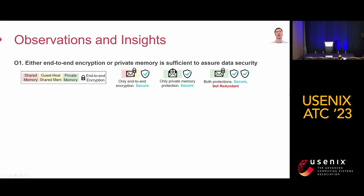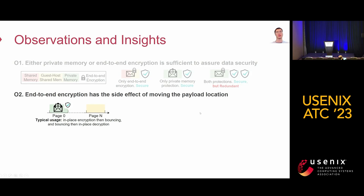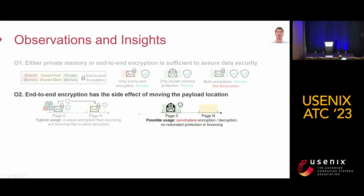Fortunately, we find three observations to help address these challenges. First, either end-to-end encryption alone or private memory protection alone is sufficient to assure data security. Applying both protections is also secure but redundant, especially for performance-critical IO data. Second, end-to-end encryption has a steady effect of moving the payload location. The typical usage is in-place encryption then bouncing, which results in redundant protection and bouncing cost. A better usage is out-of-place encryption and decryption, where IO data is directly encrypted to shared memory, resulting in no redundant protection or bouncing.